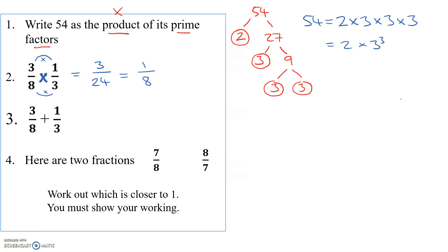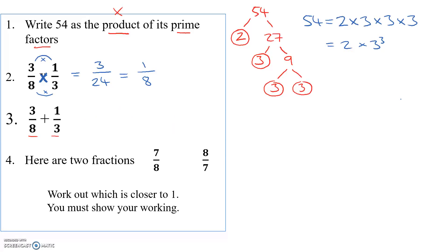Add fractions. If it said three eighths plus two eighths, easy — give me another two eighths, I've got five eighths. Don't change the denominator, just add up the numerators. The trouble here is we don't have the same denominators. So if we've got to add fractions, first thing to check: are the denominators the same? If they're not the same, you've got to make them the same. To do that, we can multiply the eight and the three, and that gives us twenty-four. That method will always work. It's not always the lowest common multiple, so if you can spot a lower common multiple, that's the best thing to do.